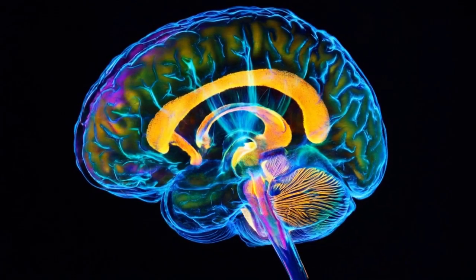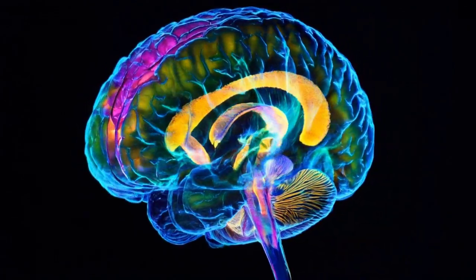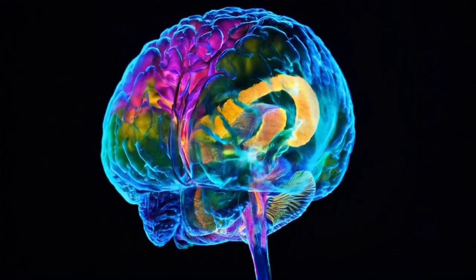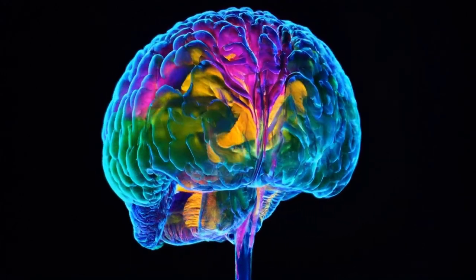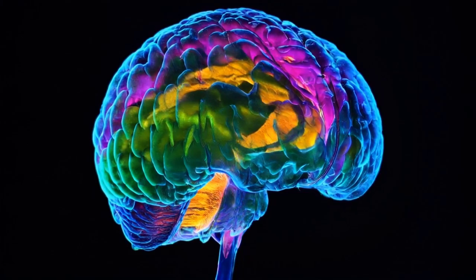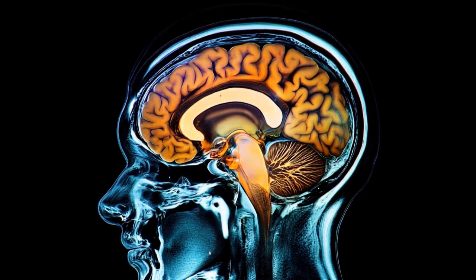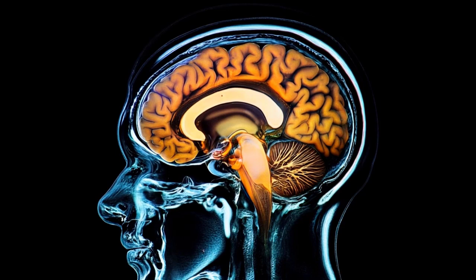The human brain is often compared to a supercomputer, but even the most advanced neural networks have limitations. What ultimately constrains our cognitive capacity? Why can't we remember everything, solve complex equations instantly, or process infinite streams of information at once?